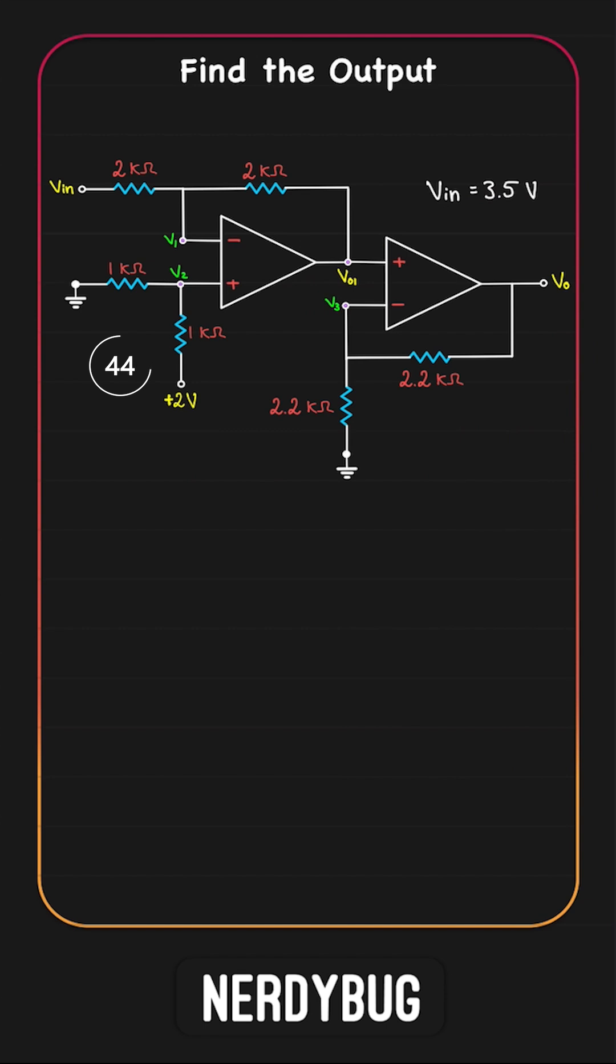In fact for the differential amplifier stage R1 by R2 is equal to R3 by R4. That means its output V01 is going to be R2 by R1 multiplied by V2 minus V1. If we give the values we get V01 to be negative 1.5V.